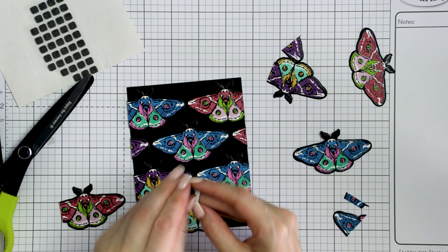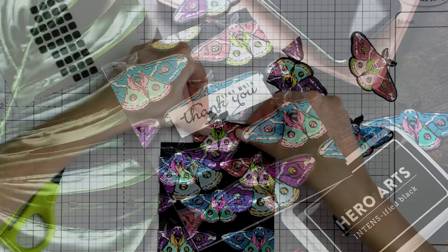To finish this card I added a simple thank you sentiment from the moth layering stamp set. I stamped it in black and heat embossed it in clear and this card was done. I hope this video has given you some stamping ideas to try with your color layering stamp sets from Hero Arts.